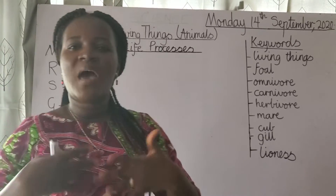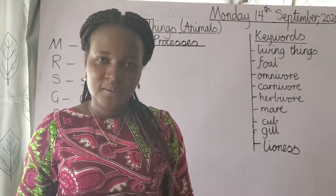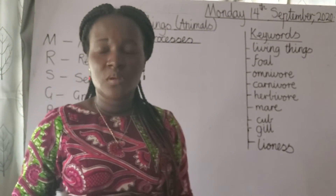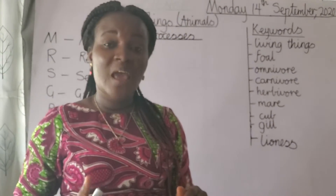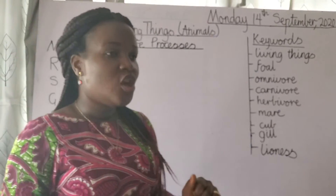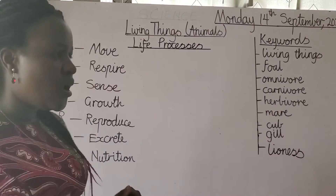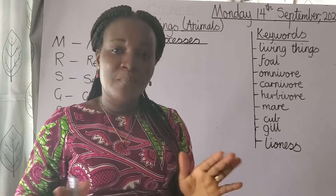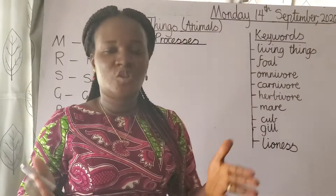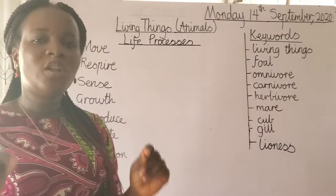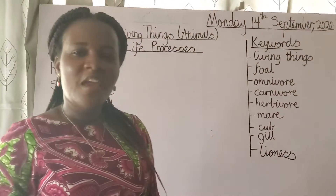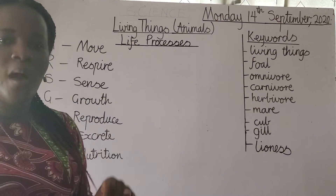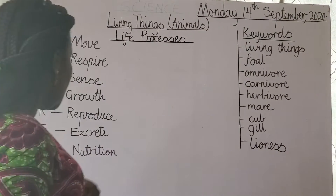Animals also excrete — they get rid of their waste. Animals urinate, and animals breathe out carbon dioxide. For our next zoom session, you are going to answer this question: what do you think will happen if animals do not excrete — if they do not get rid of their waste?